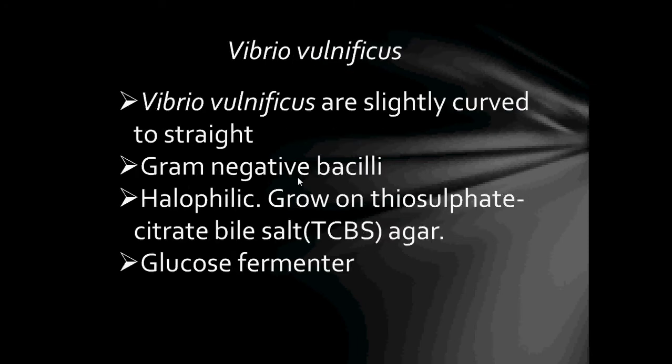Next bacteria: Vibrio vulnificus. Vibrio vulnificus are slightly curved to straight, gram-negative bacilli, and are also halophilic — salt loving. They are grown on thiosulfate citrate bile salt agar and are also glucose fermenters.